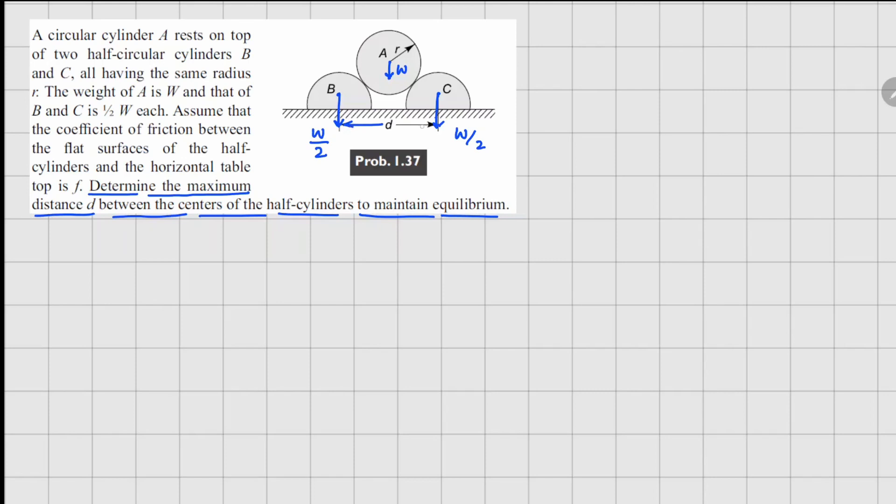So basically when we keep on increasing this distance d here at some point this cylinder here will drop down and these B and C will be separated from each other. Now there is a coefficient of friction given F here and this is only between the ground and the half cylinders and there is no friction between cylinder A and B and similarly A and C.